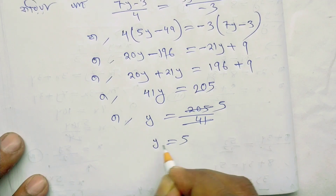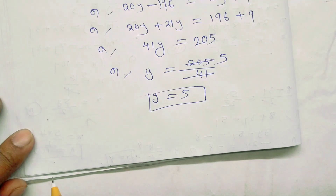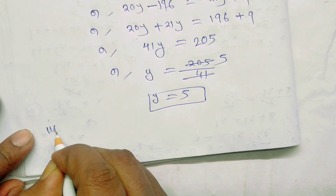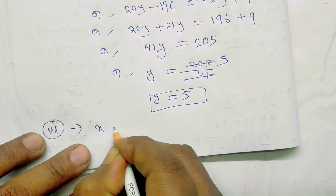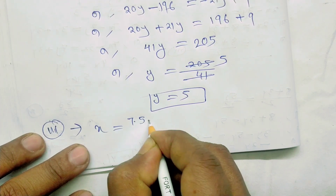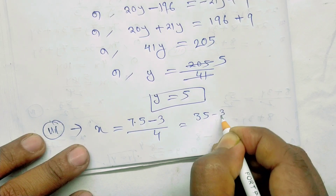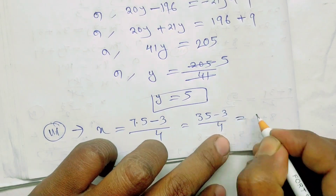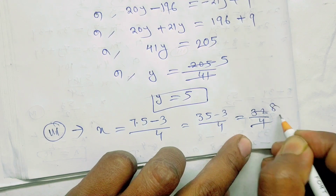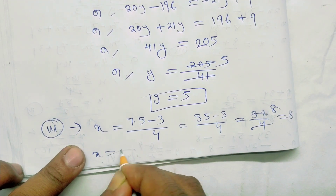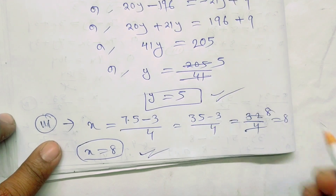3-number simultaneous equation: y equals 5. So x equals 7 into 5 minus 3 by 4. That is 35 minus 3 by 4. x equals 32 by 4. x equals 8 and y equals 5.